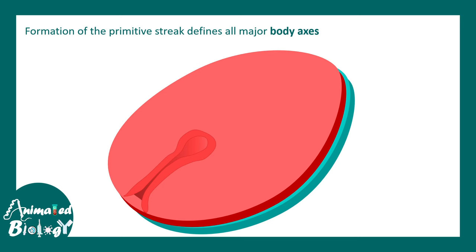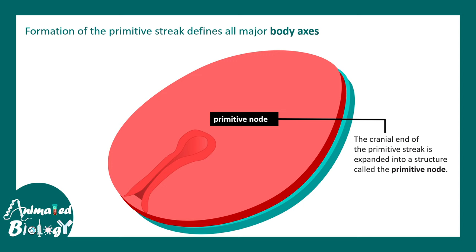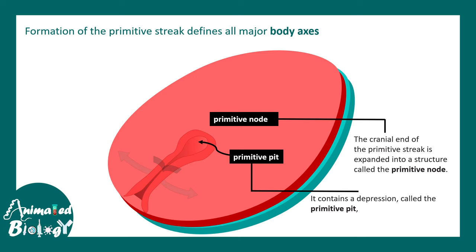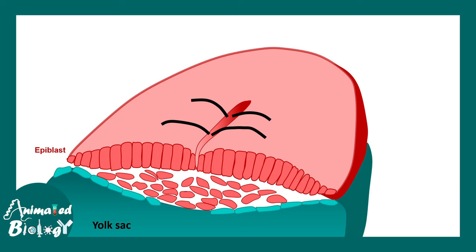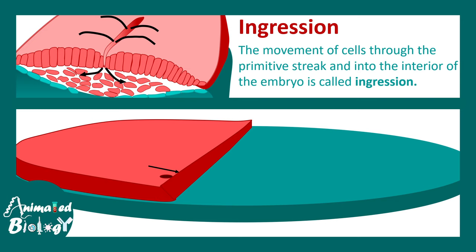At the cranial end there is a primitive node, which has a depression known as the primitive pit. Cells move through the primitive streak inward and away — a morphogenetic movement known as ingression. During gastrulation, cells move towards the primitive streak, move down through it, and move inside. In cross-section, you can see the cellular movement via arrows: cells move through the primitive streak, go down, and move away. When they move away, they eventually acquire a new fate. This set of coordinated movements is known as ingression — cells delaminate from one side and move to a new destination to become something else.